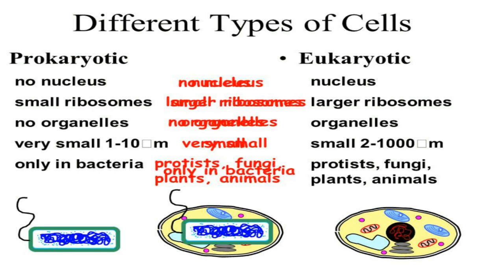We have talked about nucleus. Ribosome size is different between prokaryotes and eukaryotes — prokaryotes are 70S and eukaryotes are 80S. Organelles are found in many eukaryotes but not in prokaryotes. Eukaryotes include Protista, fungi, plants, animals, etc. Even single-celled organisms like amoeba and paramecium are eukaryotes, while bacteria are prokaryotes.